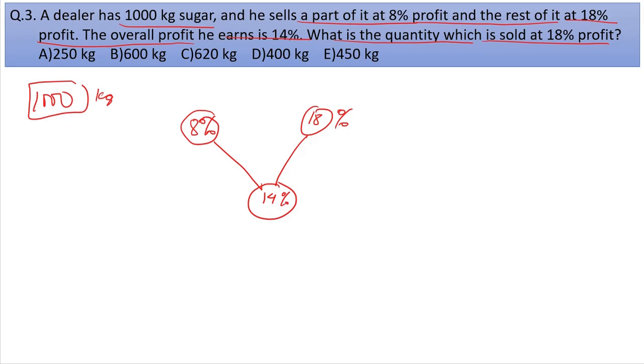18 minus 14 equals 4, and 14 minus 8 equals 6. So the ratio is 6 to 4, which simplifies to 3 to 2.